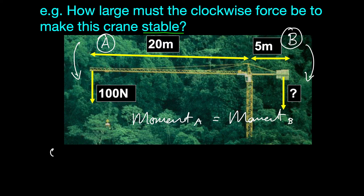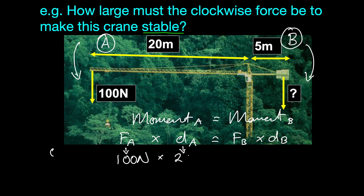The moment is given by force times perpendicular distance. So the moment of A would be equal to the force of A times the distance of A, which equals the force of B times the distance of B. The force of A is 100 newtons and the distance of A is 20 meters. We don't know the force of B yet, so we'll leave that as FB, and the distance of B is 5 meters.